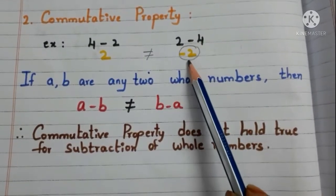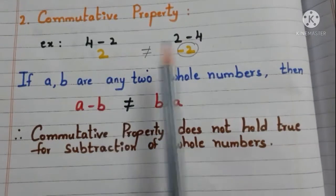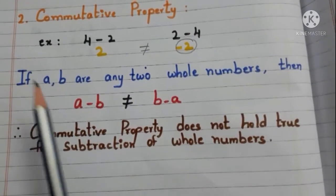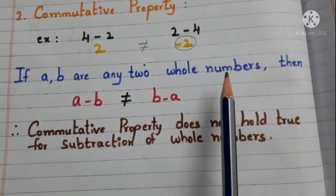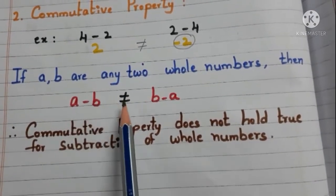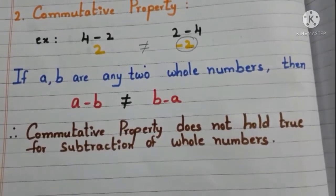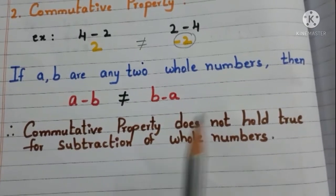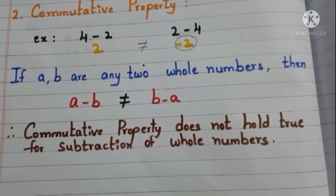2 minus 4 is minus 2. We are not getting the same result. So, if a and b are any two whole numbers, then a minus b is not equal to b minus a. Therefore, we can conclude that commutative property does not hold true for subtraction of whole numbers.